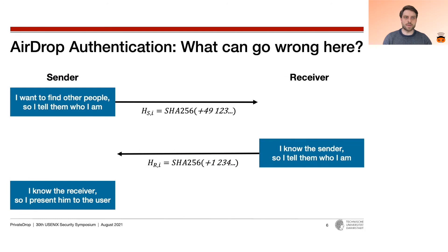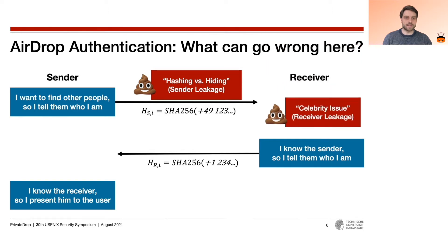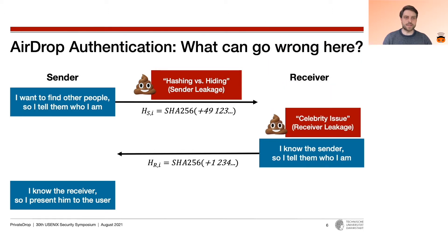So what can go wrong with such a rather simple authentication protocol? First, AirDrop uses hashing as a means for obfuscating the clear text of phone numbers and email addresses. Since the input space is small and predictable, it is trivial to recover the pre-images via brute force or dictionary attacks. The second issue is more subtle and lies in the semantics of the protocol: the receiver shares its contact identifiers if it determines it knows the sender. A well-known person, such as the boss of a company, could exploit this to extract personal contact details from employees.